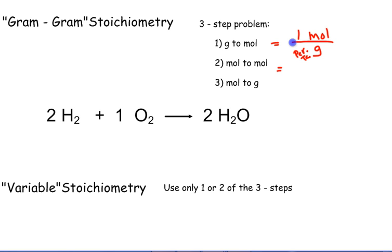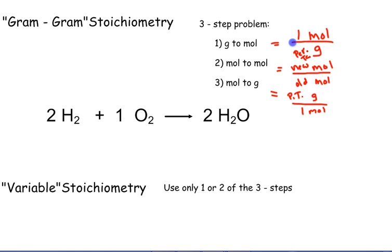The second fraction took you from moles of that first substance to moles of the new substance — moles of the old substance to moles of the new substance — and these numbers came from the balanced equation coefficients. The third fraction took you from moles of this new substance to grams of this new substance, where one mole of the new substance has some number of grams, and that comes from the periodic table.